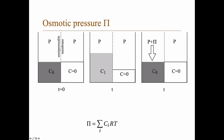The osmotic pressure is the pressure you have to apply to prevent this process from happening. If you apply exactly the osmotic pressure as a pressure difference, the net random movement of the solvent becomes zero — there is movement, but net-net it is nothing.